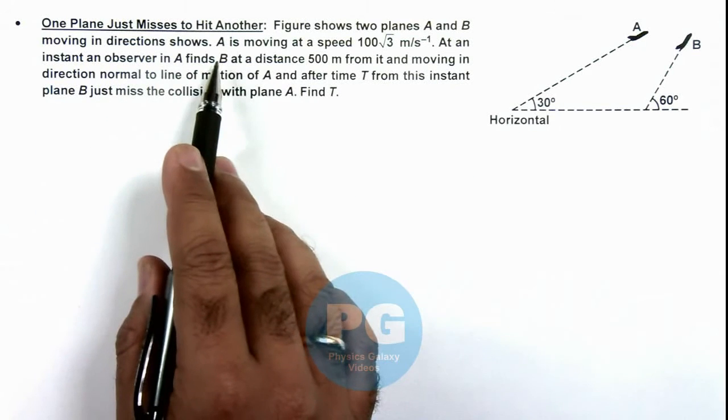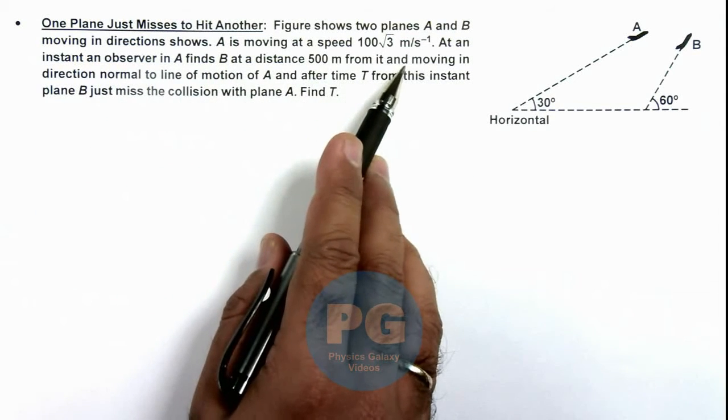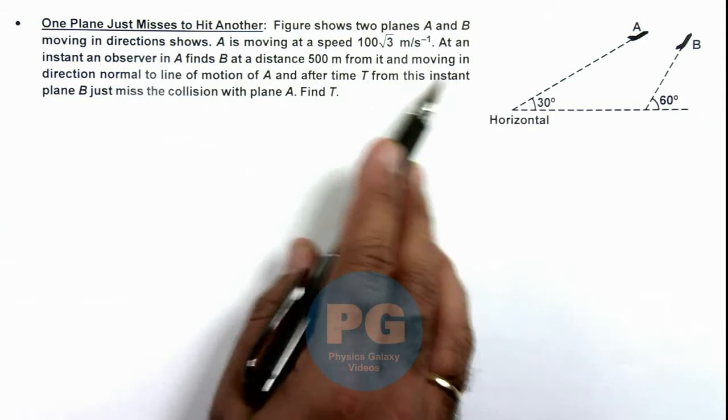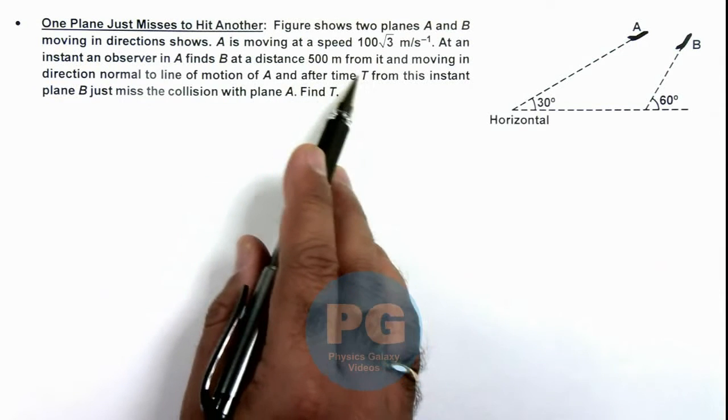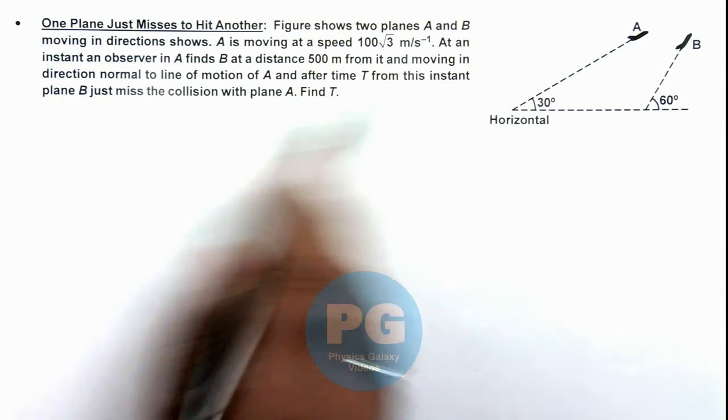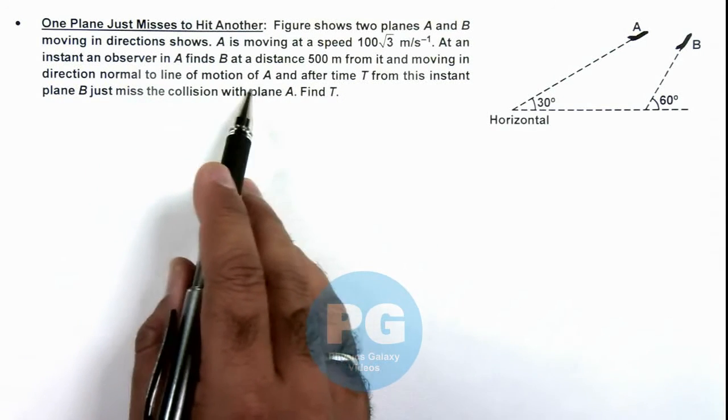Here A is moving at a speed of 100√3 meters per second. At an instant, an observer in A finds B at a distance of 500 meters from it and moving in direction normal to the line of motion of A.